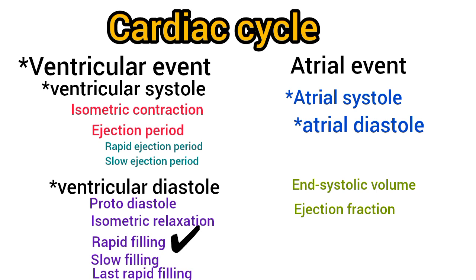The next phase is the rapid filling phase. When the atrioventricular valves are opened, there is a sudden rush of blood from the atria into the ventricles. This period is called the first rapid filling period. The ventricles also relax isotonically. About 70% of filling takes place during this phase. The rushing of blood into the ventricles during this phase causes the production of the third heart sound. After the sudden rush of blood, ventricular filling becomes slow. This phase is called the slow filling phase, and about 20% of filling occurs in this phase.